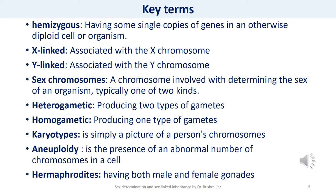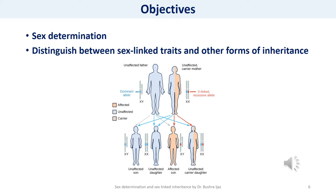Hermaphrodites are individuals born with both male and female gonads. The objectives of today's lecture are to learn about sex determination and to distinguish between sex-linked traits and other forms of inheritance.